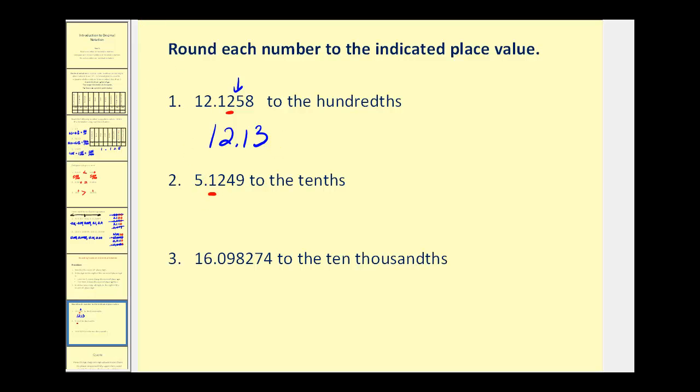On number two, the one is the tenths, and the two is the decision maker. The two tells us to round down, so we'd leave it as a one, we'd have 5.1, or five and one tenth.